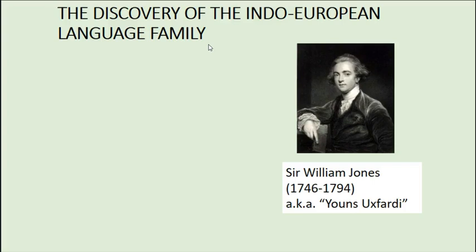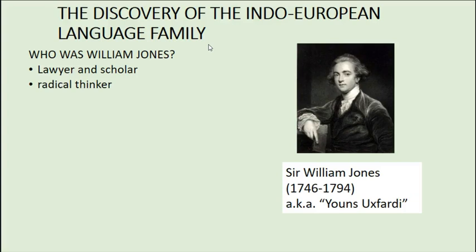So who was William Jones? He was a lawyer and a scholar. He had intended to study Greek, Latin, and the humanities at university, but he wasn't rich enough to support himself, so he went to law school. He continued to be a scholar and was also a radical thinker keen on Enlightenment and Lockean ideas about liberty and equality — perhaps a friend of American independence. There were people in England arguing on the side of the American revolutionaries, including Edmund Burke, considered a founder of political conservatism, who also argued the case for American independence.